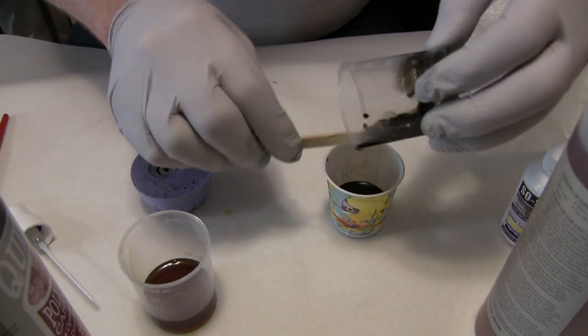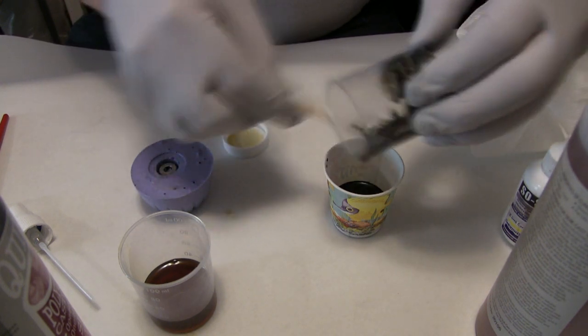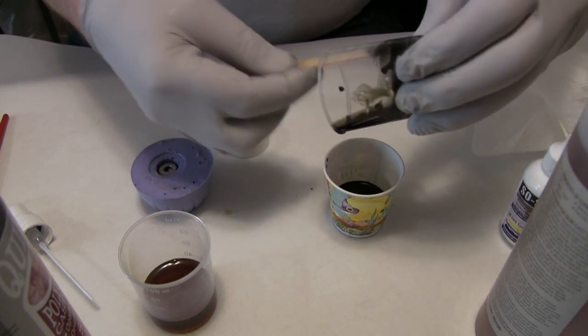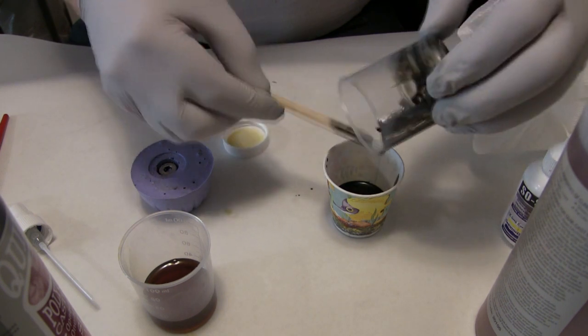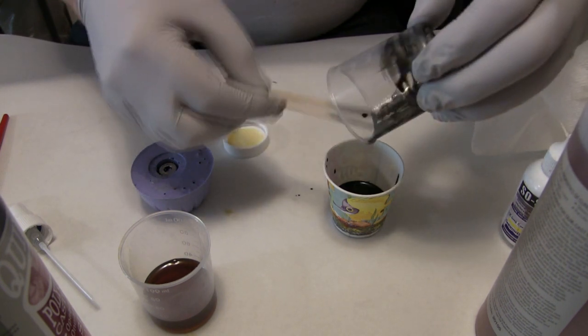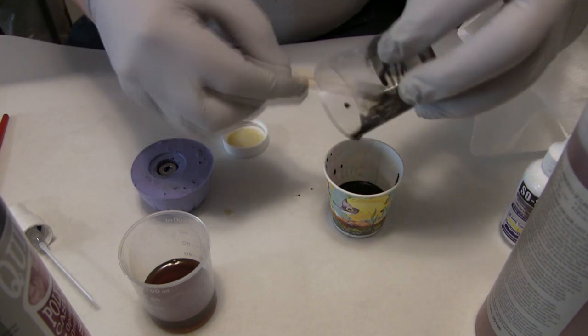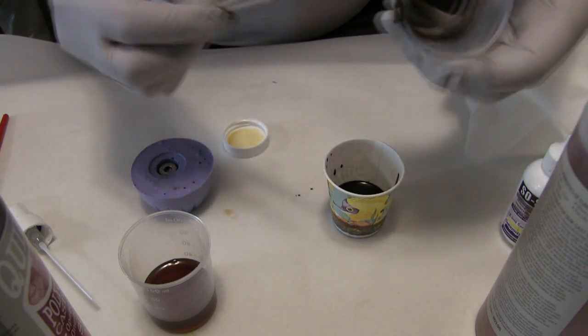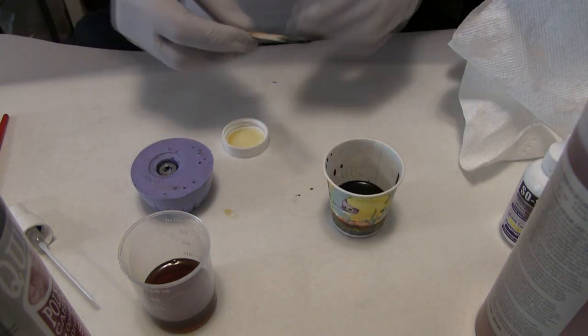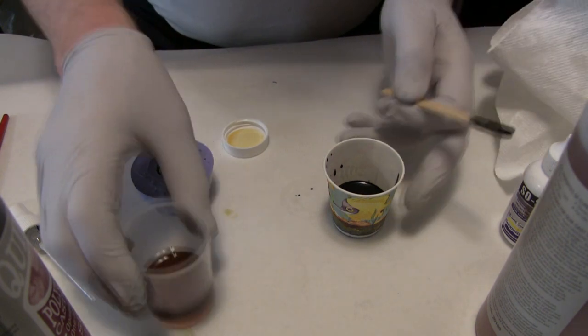There's a tip. Put the colorant in after you pour in the B material so that you don't get your graduate dirty to the point where you can't read the gradations anymore.